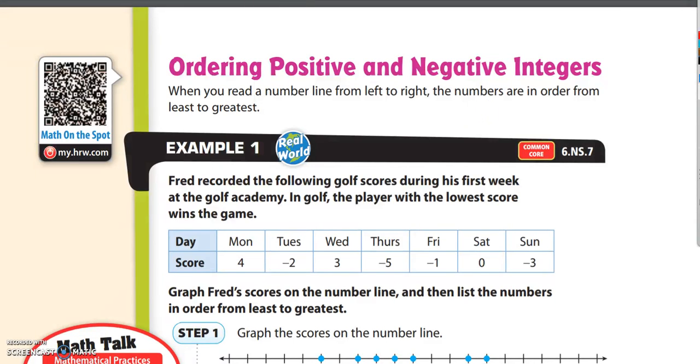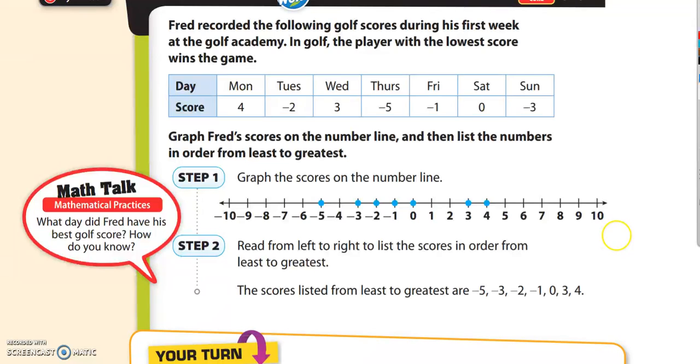Example 1 is about golf. Fred recorded the following golf scores during his first week at the golf academy. In golf, the player with the lowest score wins the game, so pay attention to that. We are looking for not only low scores, we're actually looking for negative numbers, if possible. You can see all of Fred's scores, and some of his scores were positive numbers and some of the scores are negative numbers. It says, graph Fred's scores on the number line and then list the numbers in order from least to greatest.